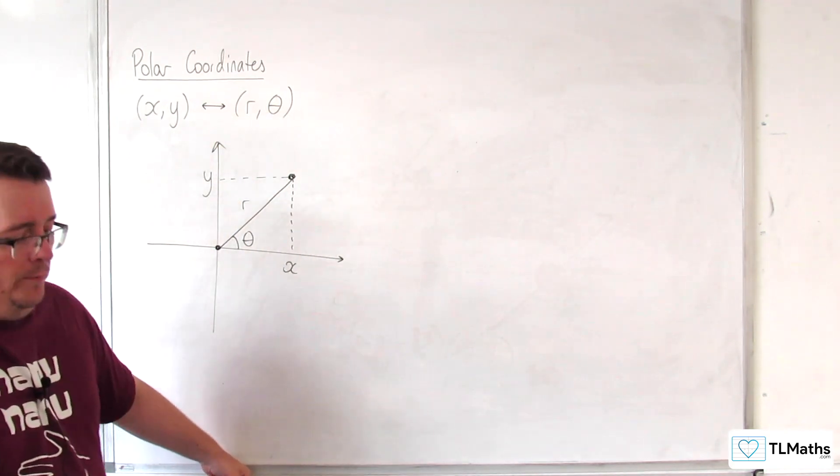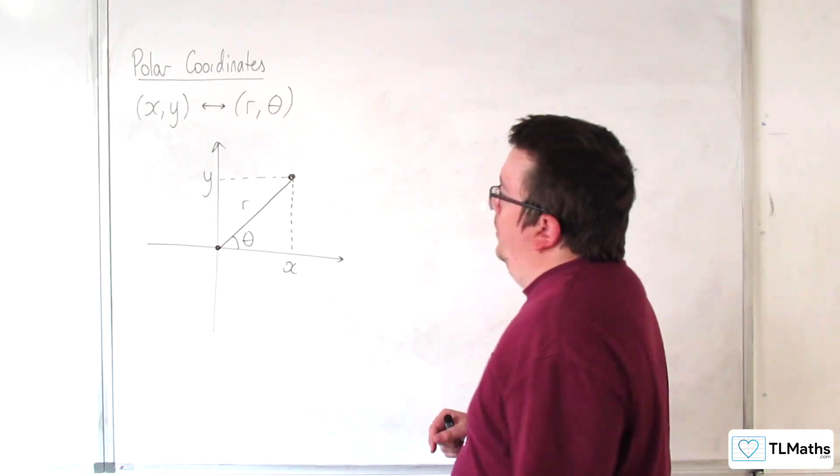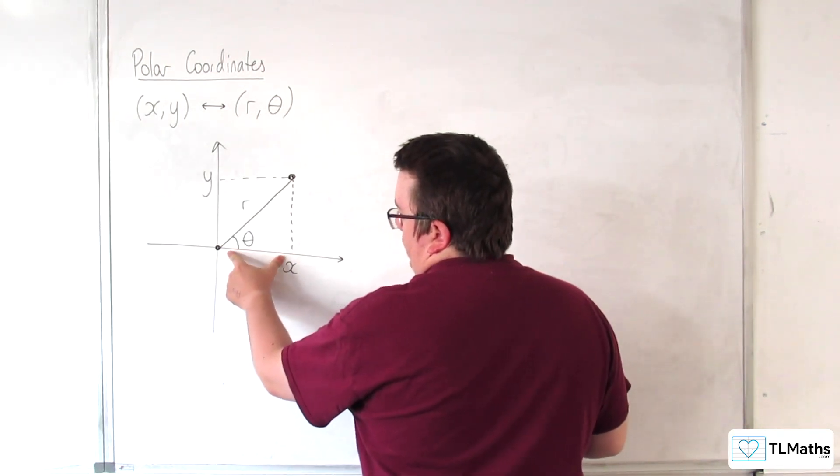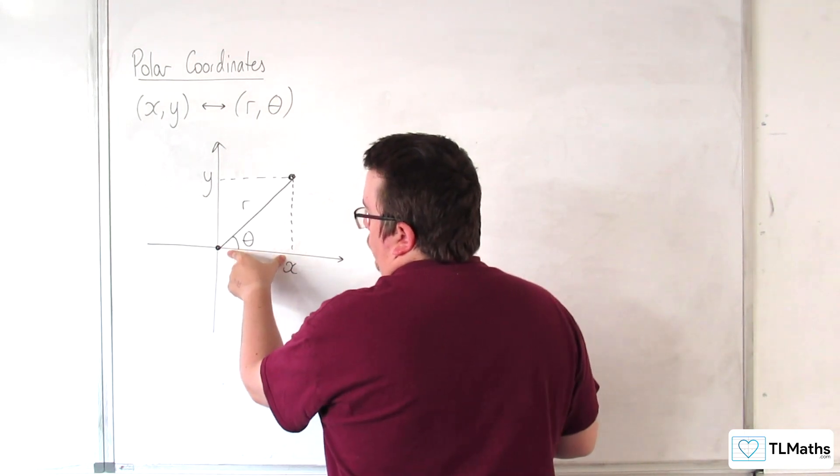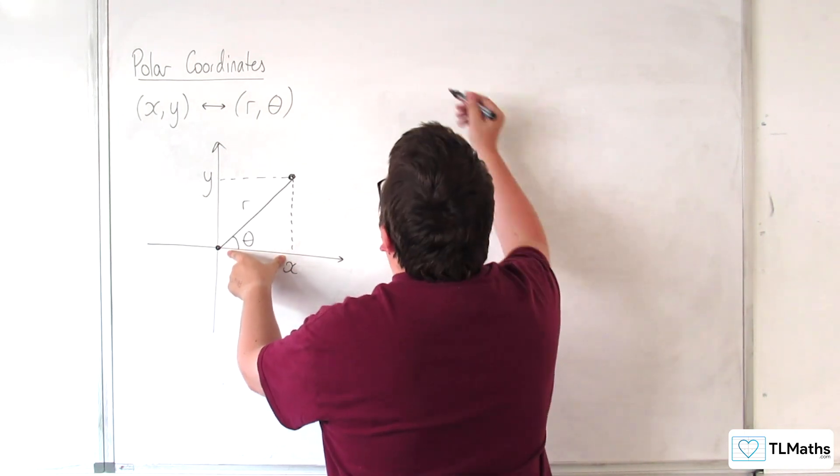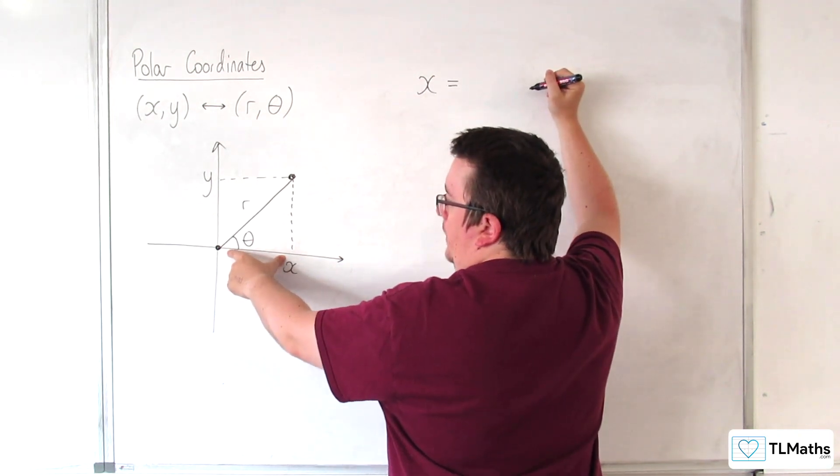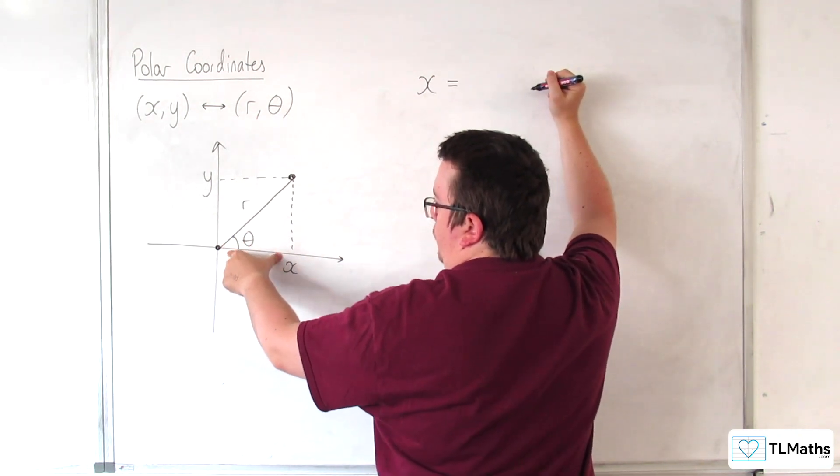What we could then write is, well, X, this distance X here, can be written using trigonometry as the adjacent side of this right-angled triangle. And so that would be R cosine theta.